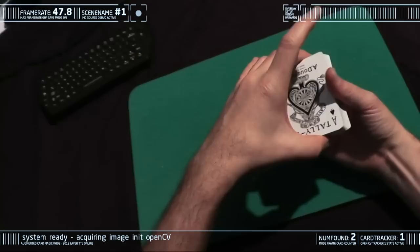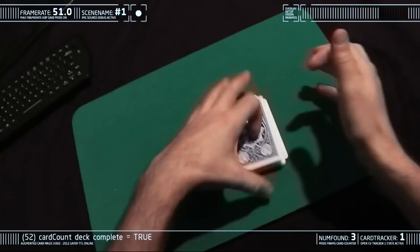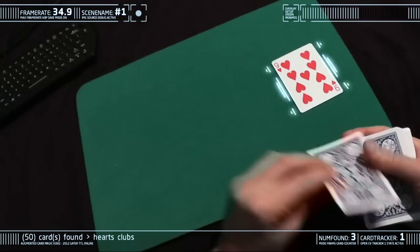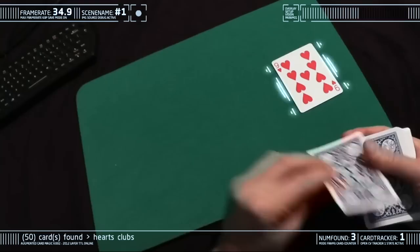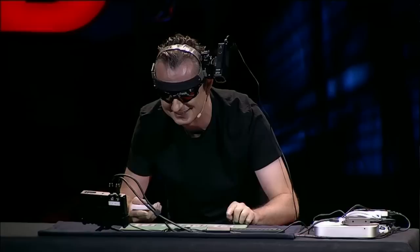System ready. Acquiring image. For those of you who don't play cards, a deck of cards is made up of four different suits: hearts, clubs, diamonds, and spades. The cards are amongst the oldest of symbols and have been interpreted in many different ways.